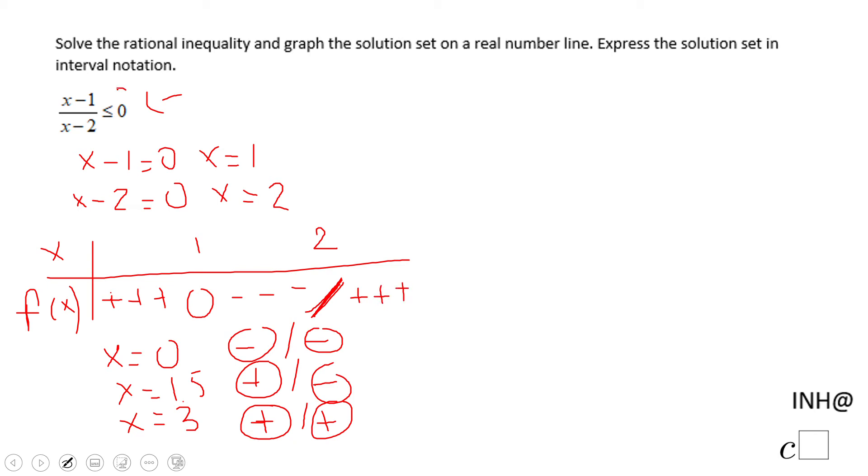Now let's look back to the original inequality. It says less than or equal to 0. We notice the interval should be right here. Now be careful, because it has the equal sign. I'm going to put a bracket, closed interval for 1, because I see that 0.